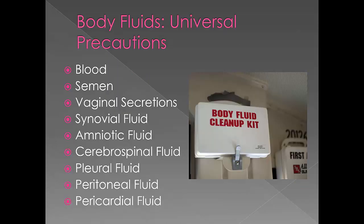When we talk about universal precautions, it's important to understand that all body fluids could potentially be infected with bloodborne pathogens. Body fluids include blood, semen, vaginal secretions, synovial fluid, amniotic fluid, cerebrospinal fluid, pleural fluid, peritoneal fluid, and pericardial fluid.